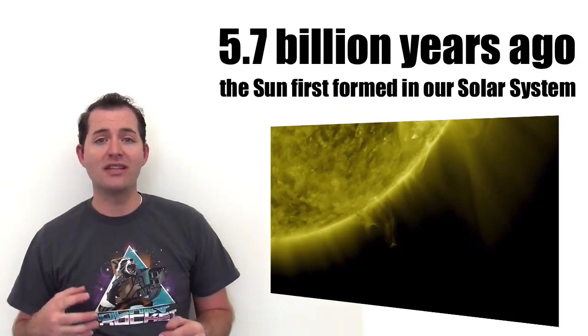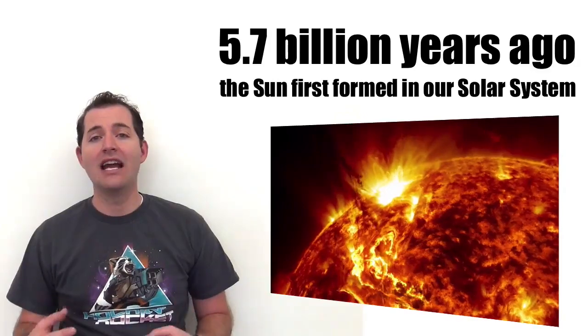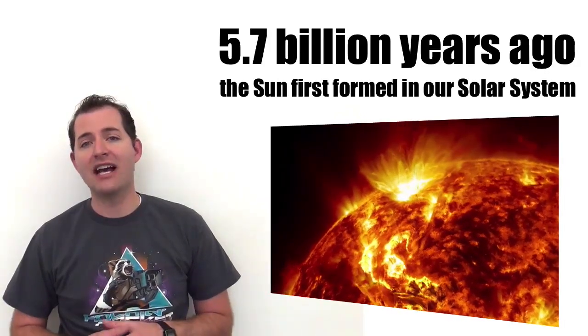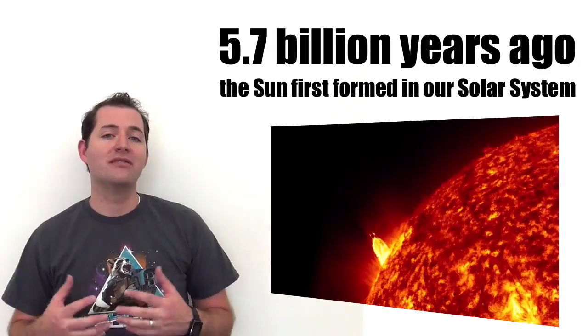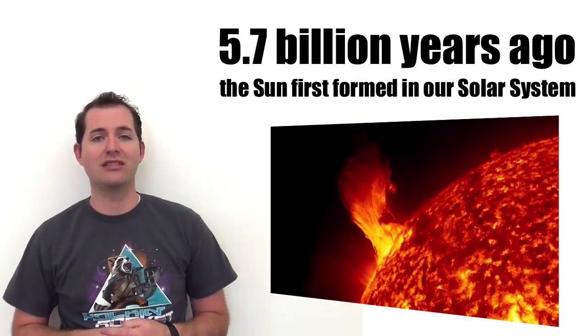So about 5 billion years ago, the Sun was formed from a clump of gas in this area in the universe. And later, a disk of gas and dust formed around that new star, which eventually led to the formation of the planets and all of the objects we have in our solar system today, including the Earth.